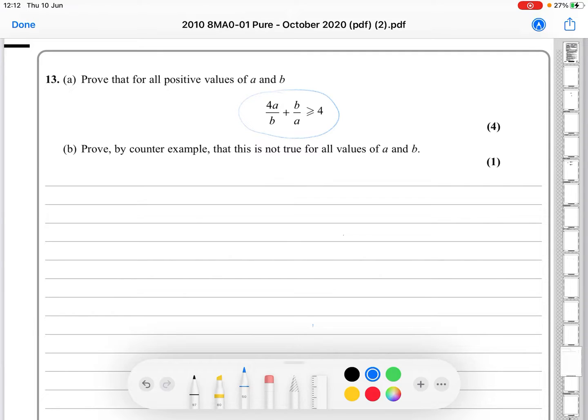So if we can rearrange this and write, 4a over b plus b over a minus 4 is greater than or equal to 0, that's a good place to start. If we can rearrange it so that we get to that point, it should work.